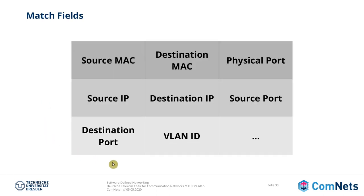What can you actually match with OpenFlow? With OpenFlow you can look at the header from layer 2 to layer 4. So as mentioned, you can look at the source or destination MAC addresses, you can look at the physical port on which the packet arrived, you can look at layer 3 — source IP or destination IP — and of course also layer 4, like TCP or UDP destination or source port, but also things like VLAN. There are many possible header fields which you can use for matching a packet for very classical tasks.